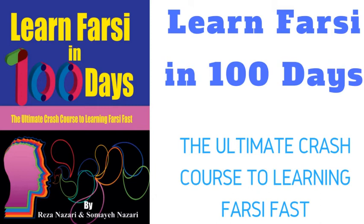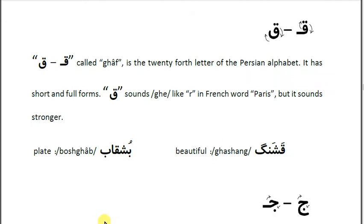In the previous videos I reviewed some common letters. Today I'm going to review some more common Farsi letters. The next letter is called 'Qaf.' It sounds like 'Q.' Qaf has two forms — this is the first form, similar to 'Fe' but with two dots above. The full form is different from 'Fe' — it is written this way, with two dots above.